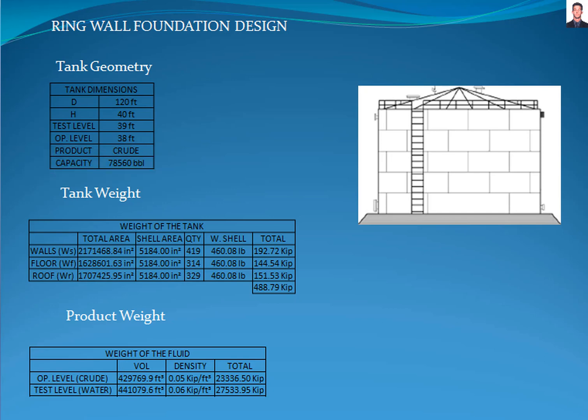To have economic design, there is a non-written rule for a large tank which limits the ratio of the height to diameter to 0.5. Taking in consideration this non-written rule, we are going to try a tank with a diameter of 120 feet and height of 40 feet.